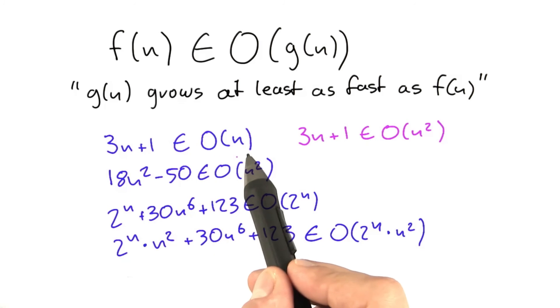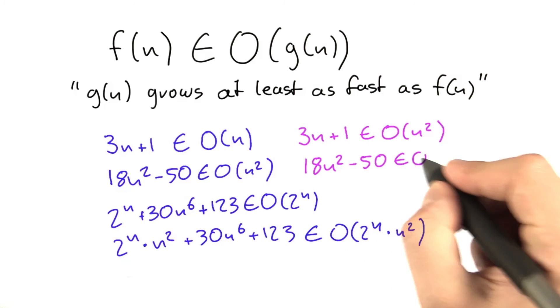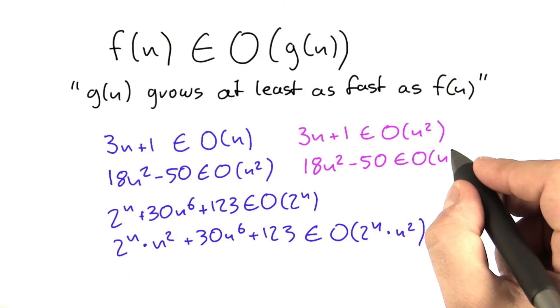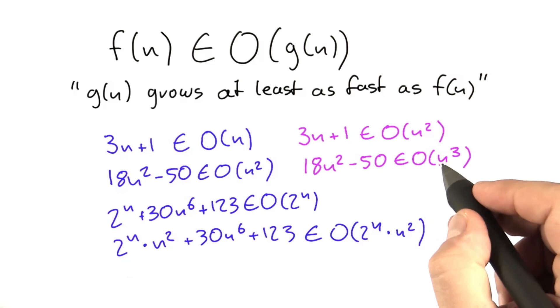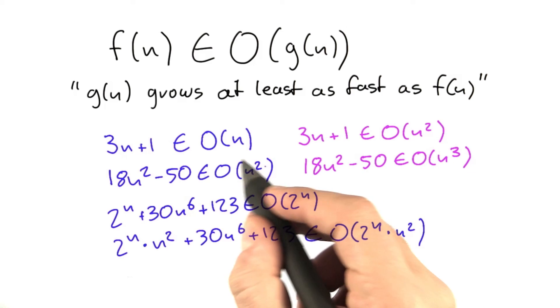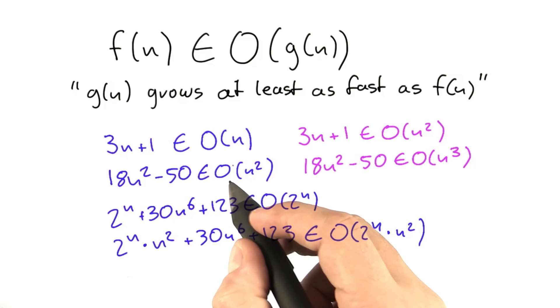Similar down here, you could also say that 18n squared minus 50 is contained in O of n to the power of 3. But again, this would be unusual to write because if we have a tighter bound that we can state, we would state this part over here.